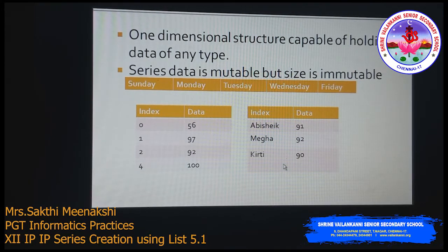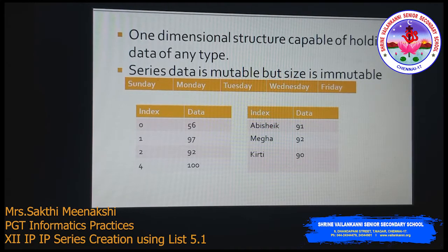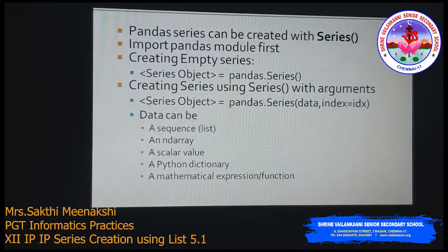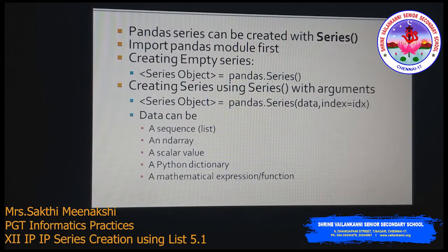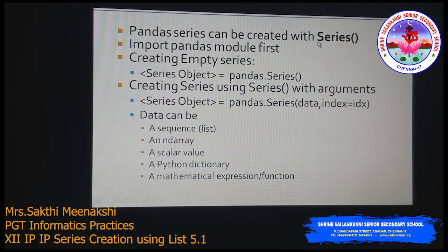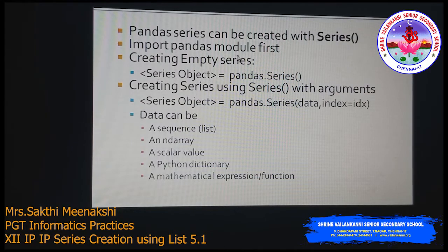In a NumPy 1D array, the index is always a numerical value. In a pandas Series, we can change the index to string, float, or any other data type. To create a Series, pandas provides a method called Series — note that the 'S' is capital. You have to use this method to create a Series.